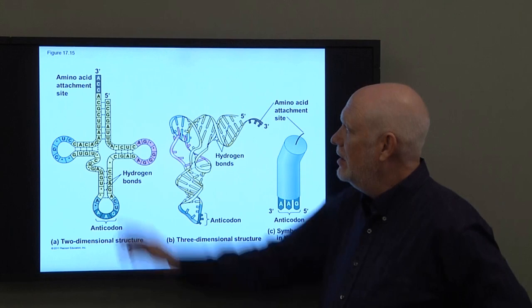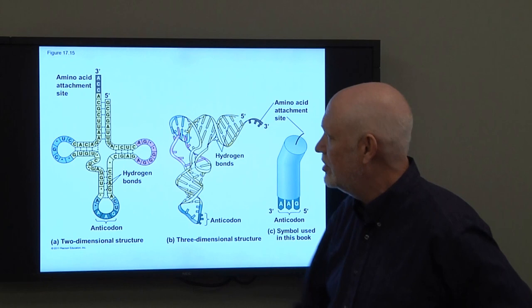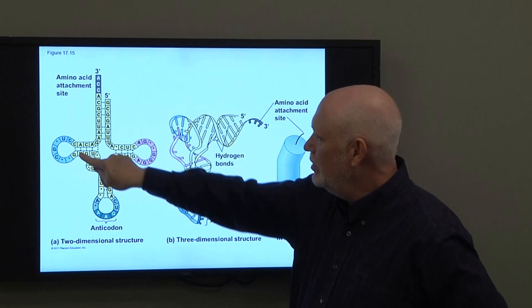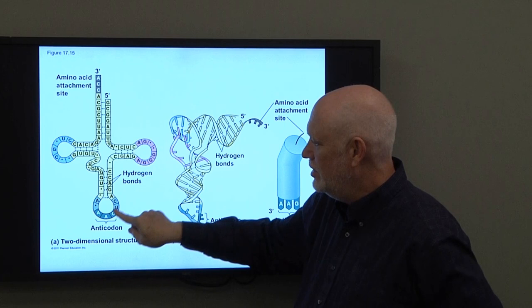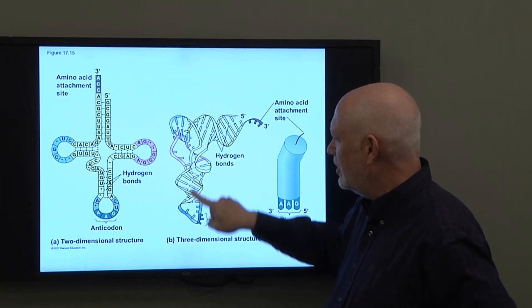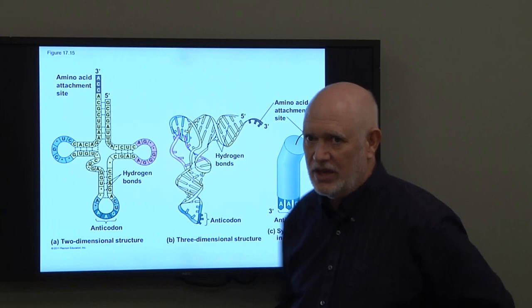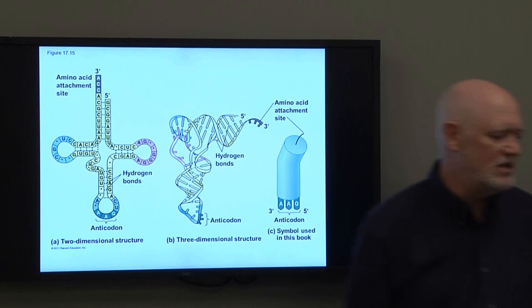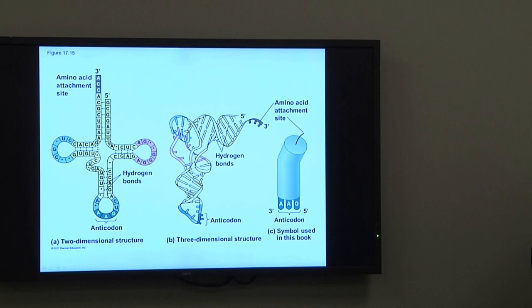Here's what a transfer RNA looks like in its secondary or two-dimensional structure — it forms a cloverleaf shape, with base pairs within four different arms. The amino acid is attached at one end, and the anticodon is at the other. In its three-dimensional structure, it takes on an L shape, with the amino acid attachment site at one end and the anticodon at the other end.